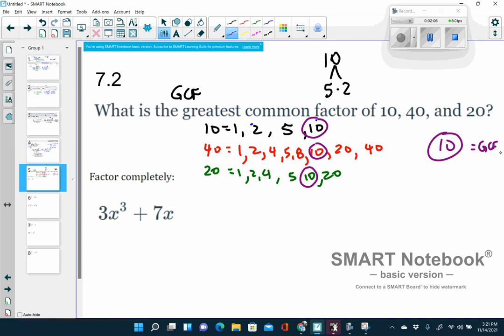For a factor completely, you're going to do something similar. 3 and 7 don't have any common factors. x to the third means that there are three x's. x to the first means that there are one x's. So you look to see what's common. There's one x in both. So I'm going to take that x and I'm going to factor it out.